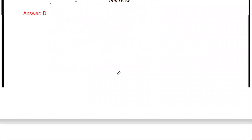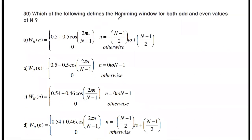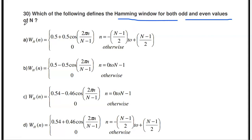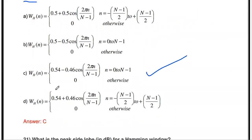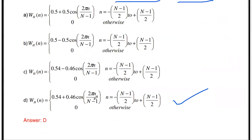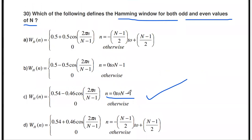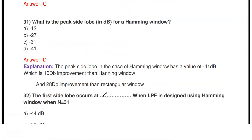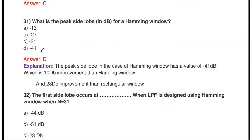Which of the following defines the Hamming window for both odd and even values of N? The formula is: W_H(n) = 0.54 − 0.46·cos(2πn/(N−1)) for n from 0 to N−1, and 0 otherwise. For odd N the formula uses +0.46, while for both odd and even N the formula uses −0.46, and the time range changes to 0 to N−1. This is used to design causal filters.